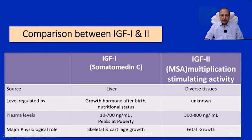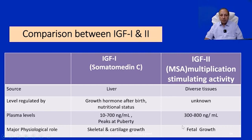The difference between IGF-1 and IGF-2: IGF-1, also called somatomedin C, is sourced from the liver; IGF-2 is produced by diverse tissues. IGF-1 is primarily regulated by growth hormone after birth and is dependent on nutritional status. Its level increases at puberty. The major physiological role to remember is that IGF-1 is important for skeletal and cartilage growth, whereas IGF-2 is responsible for fetal growth — during the fetal period, growth of the person is dependent on IGF-2.